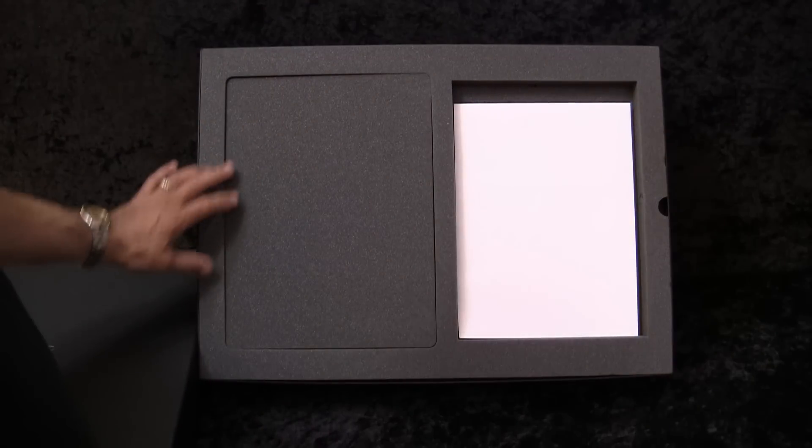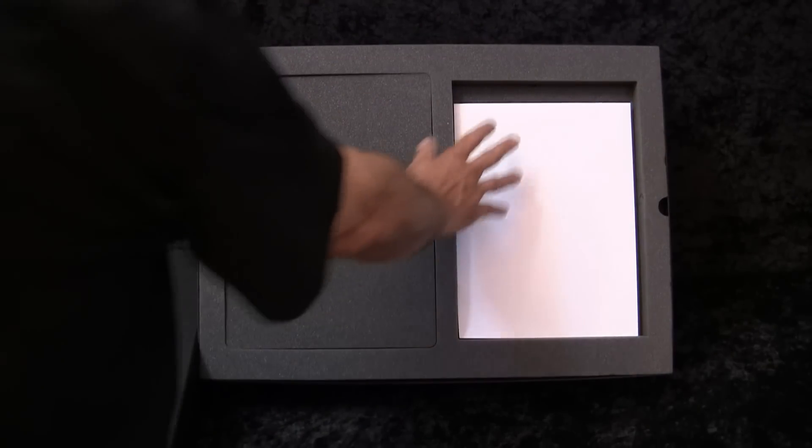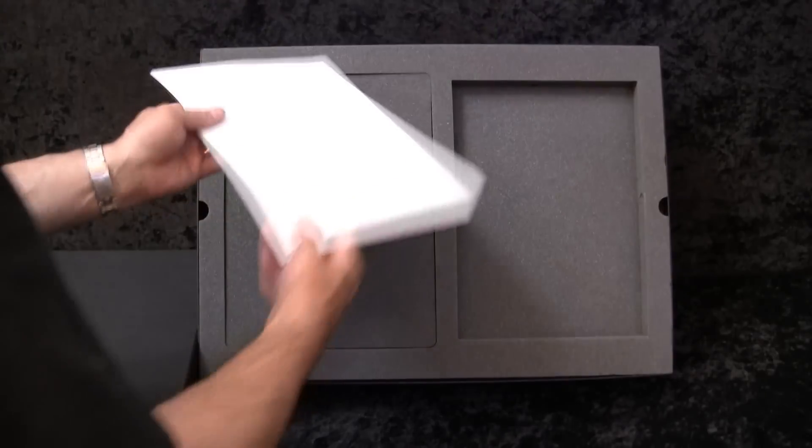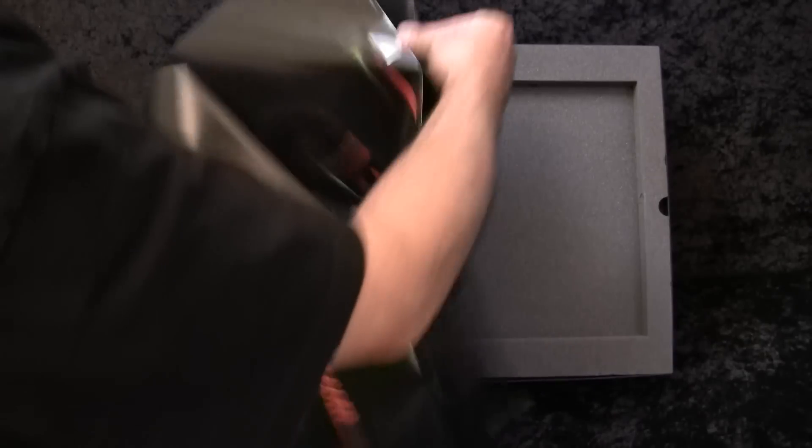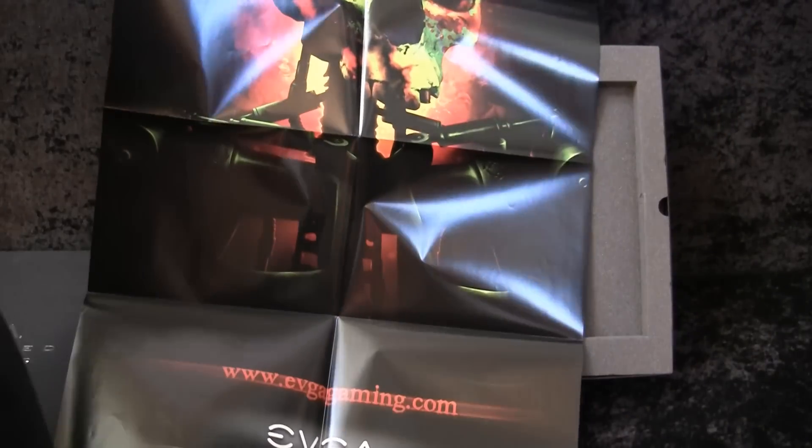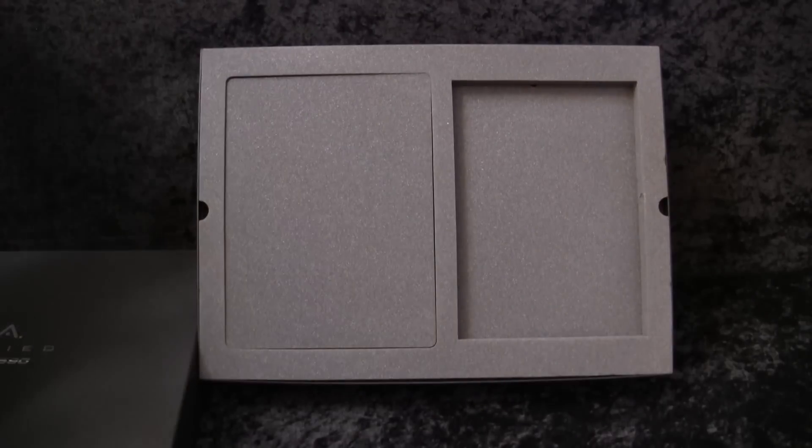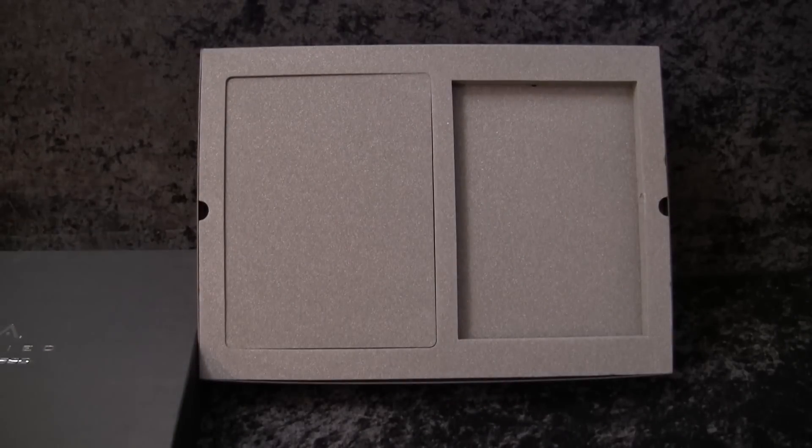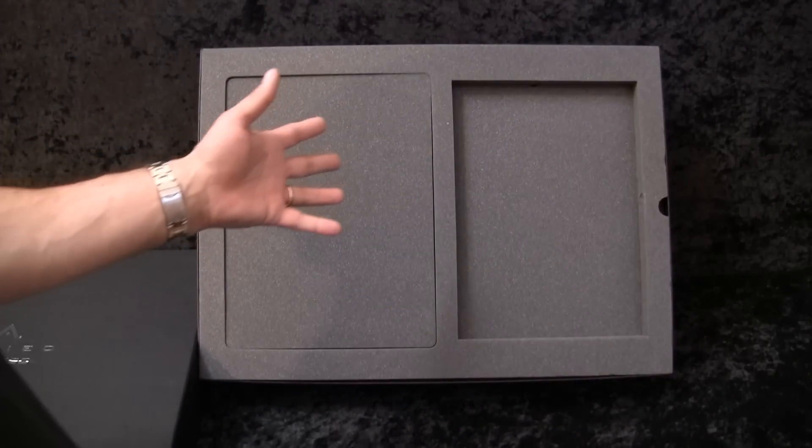When I take off the lid here, there's quite a bit of foam here to protect everything. Over here what we have is a poster that EVGA sends out. Then what else comes with this that's not in the box, let me move that poster over here, is you would get a t-shirt and then a mouse pad. I'm from my understanding the mouse pad is actually a pretty nice mouse pad.